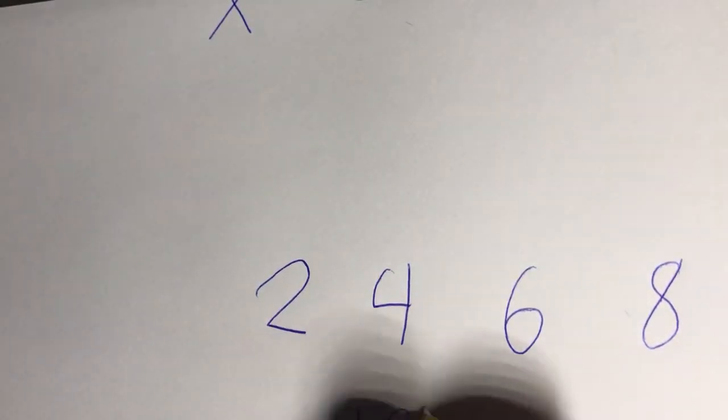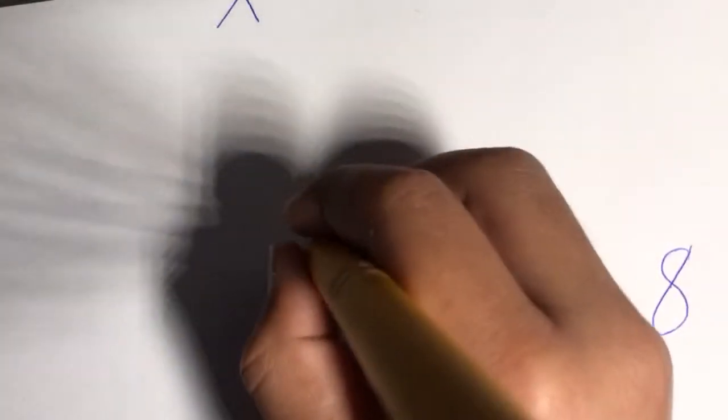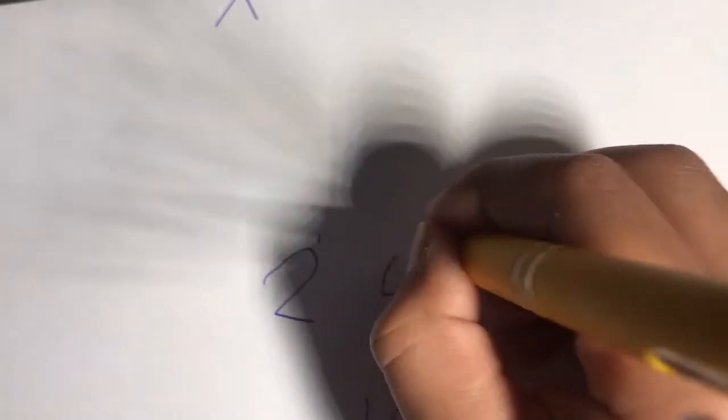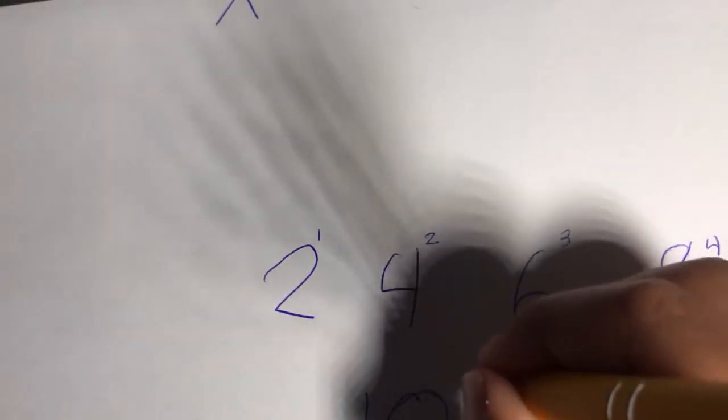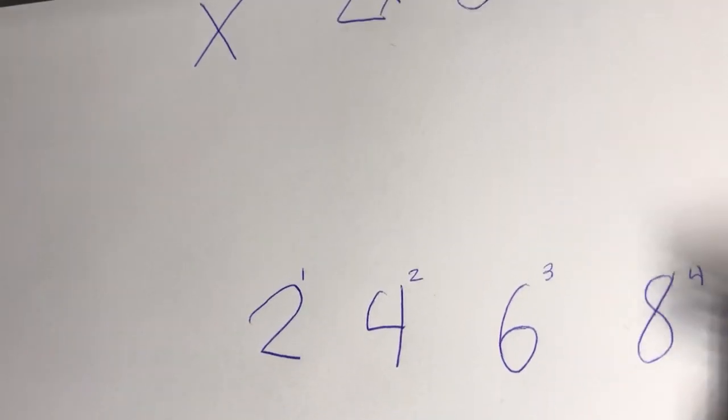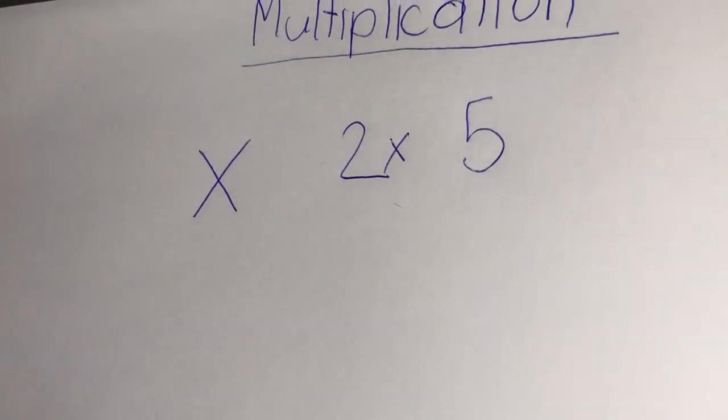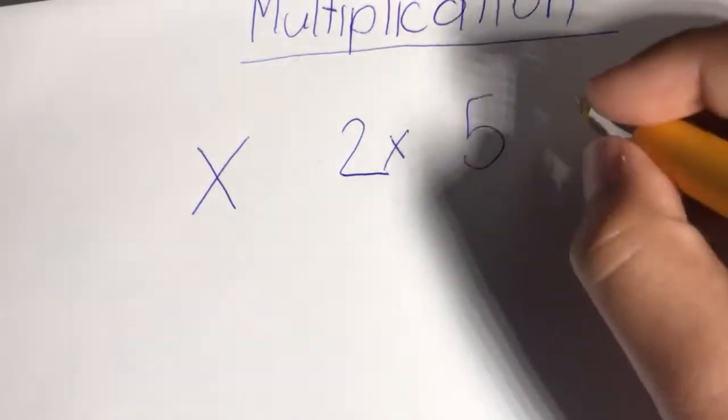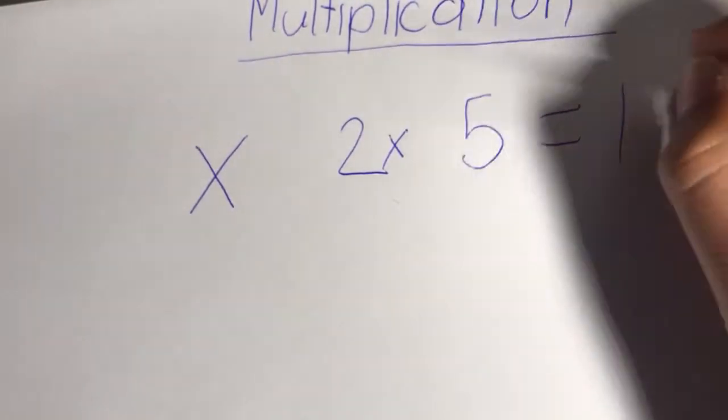See, I did it one, two, three, four, five times. So two times five equals ten.